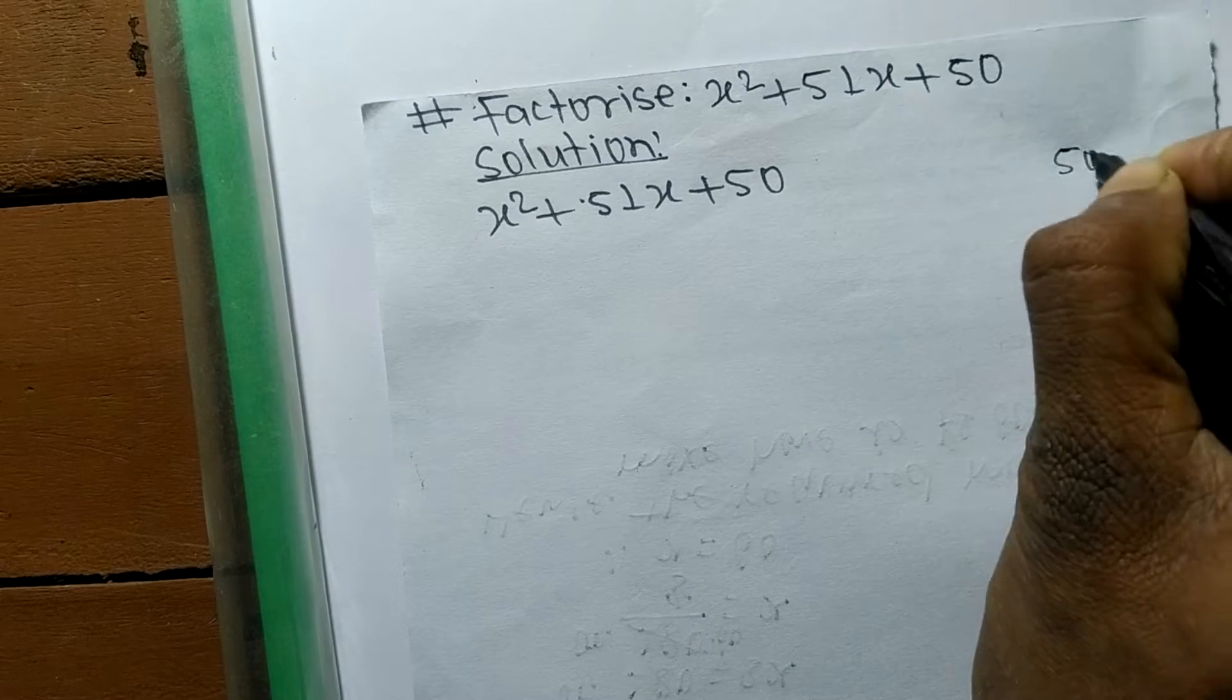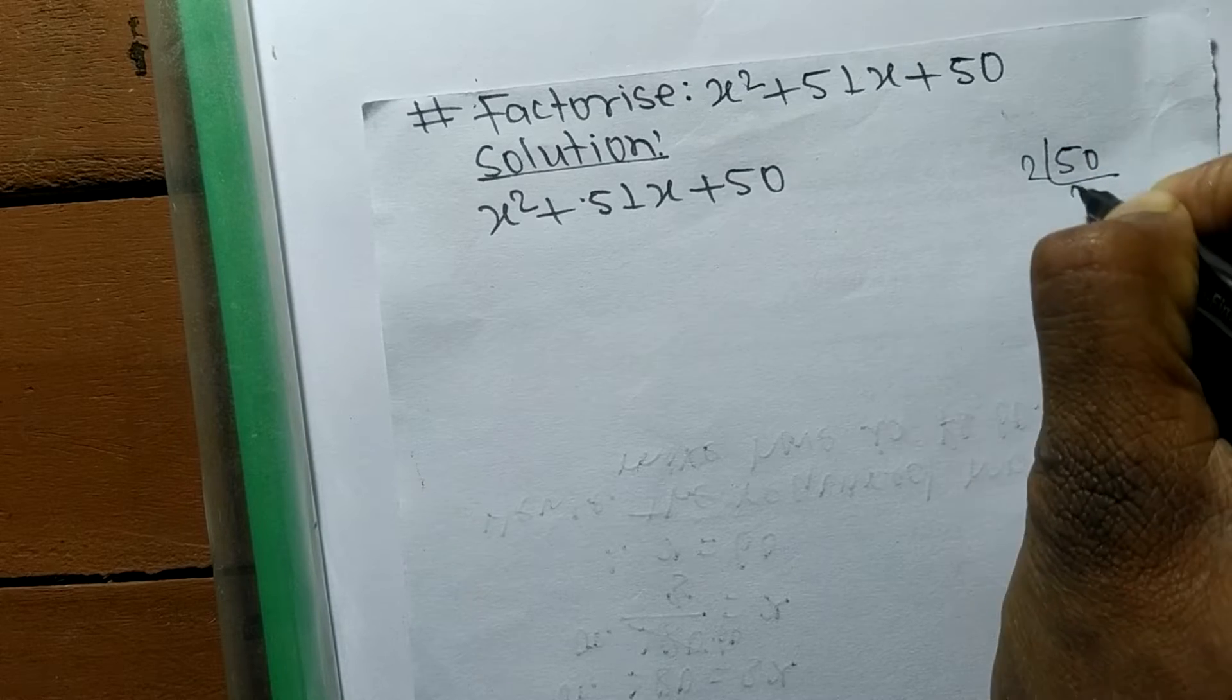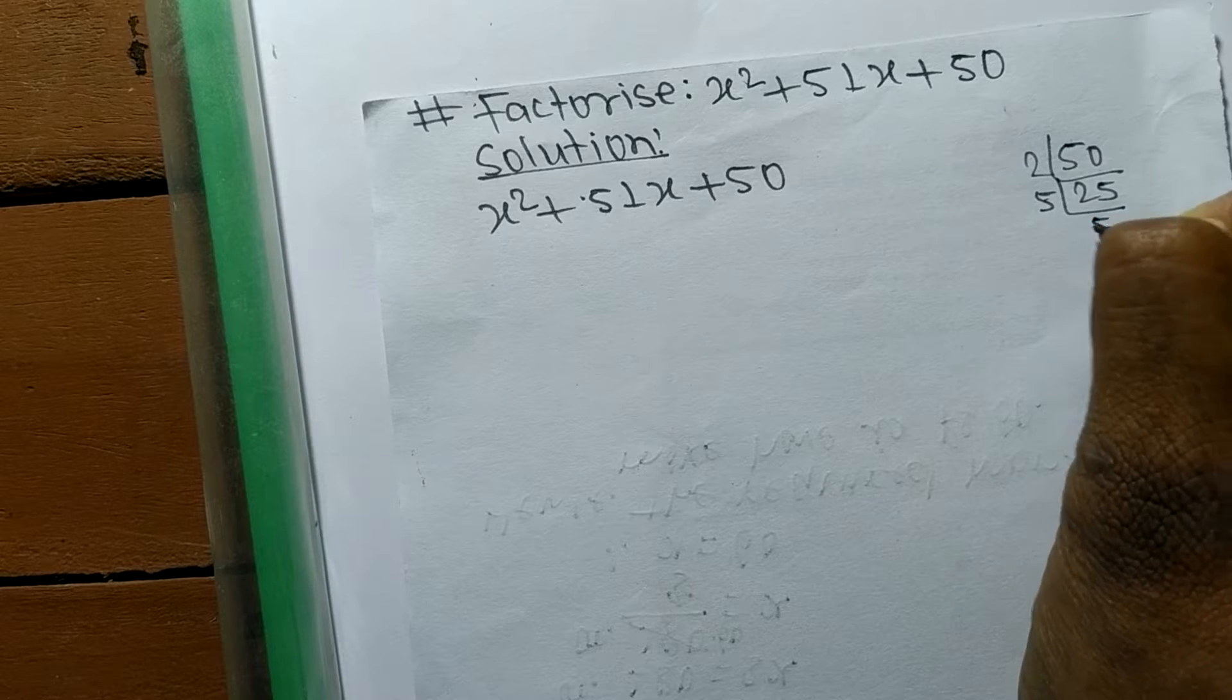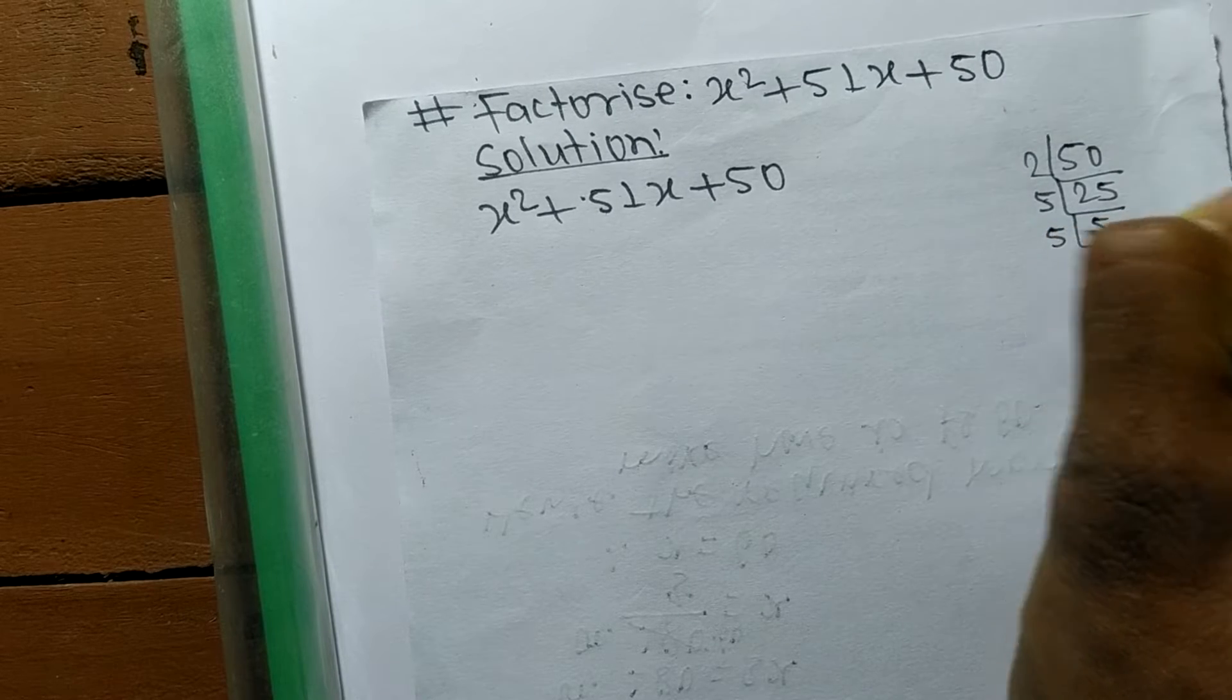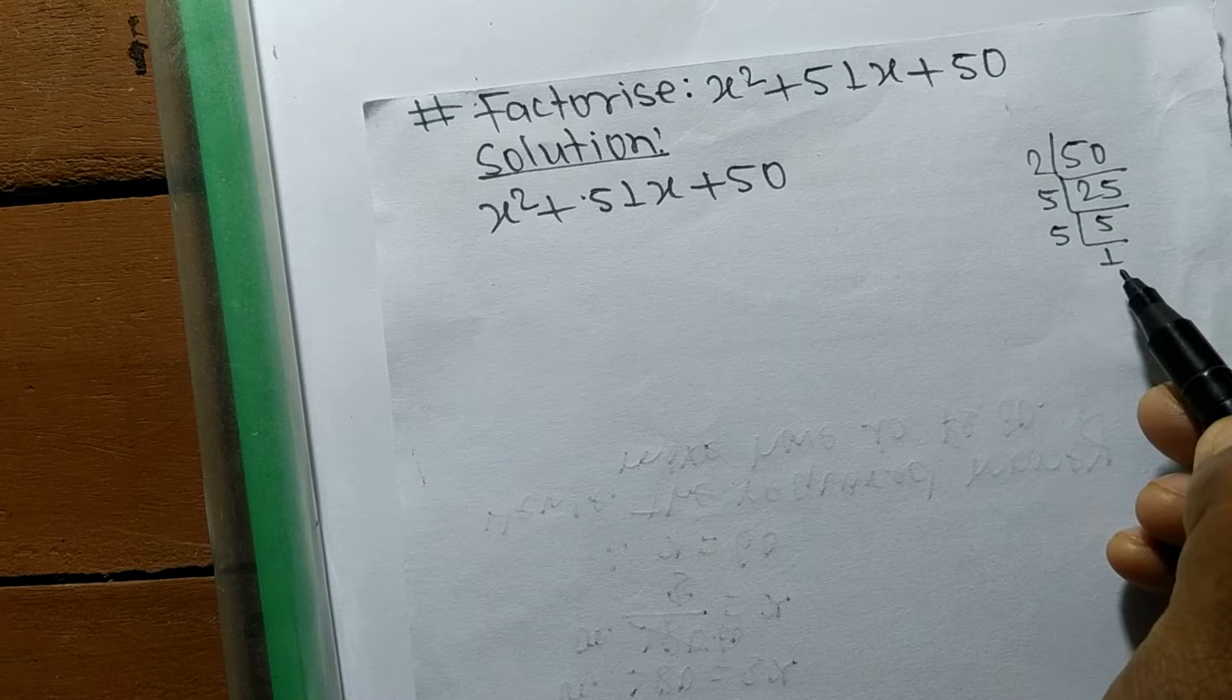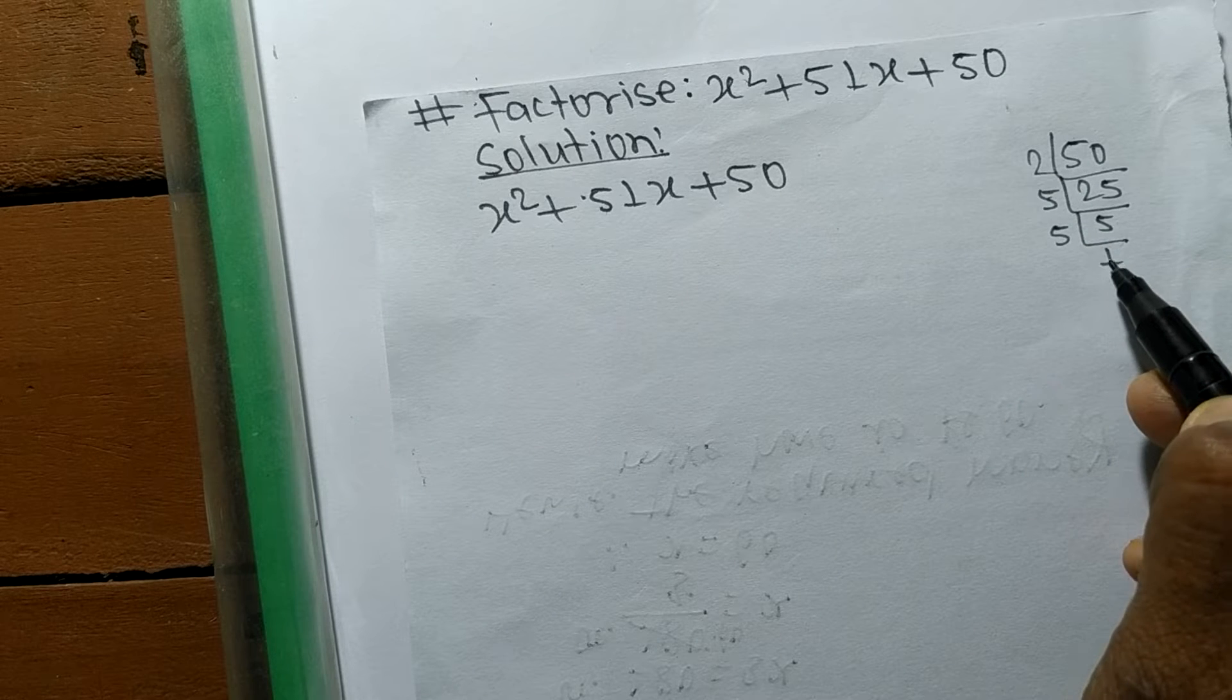So 2 times 25 equals 50, 5 times 5 equals 25, and 5 times 1 equals 5. We got the numbers here: 2, 5, 5, and 1. From these numbers,